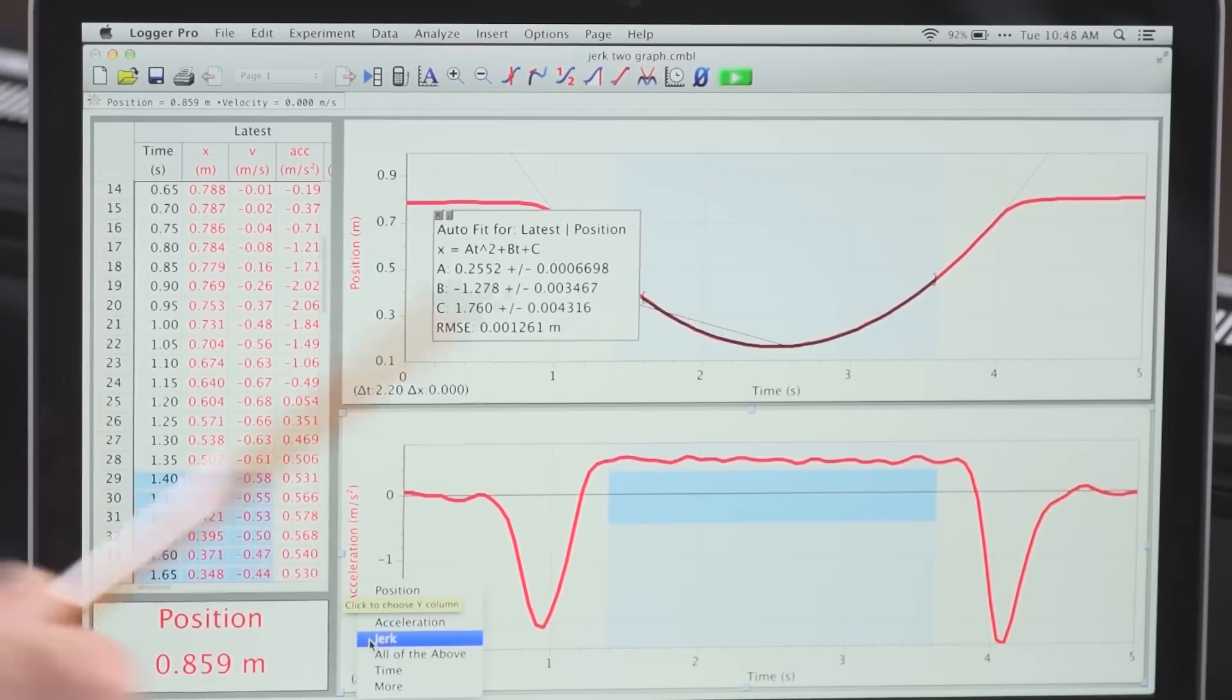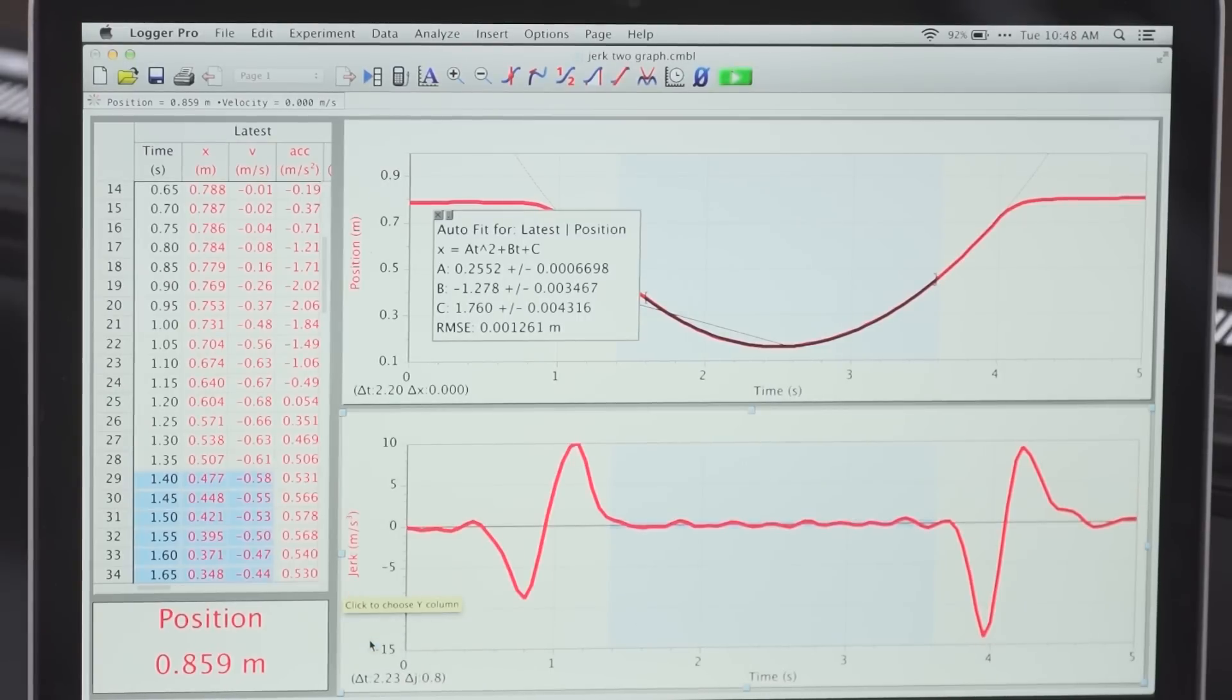Since the acceleration graph is constant, the jerk graph should be zero during this time interval, and indeed it is. That would be tough to do with a motion detector.